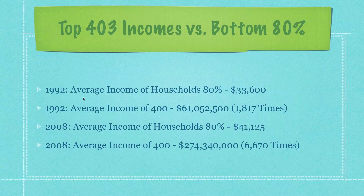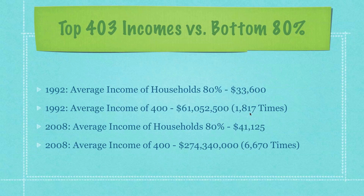Breaking everything down further: in 1992, the average income of households for the bottom 80% of U.S. citizens was $33,600, rising to $41,125 in 2008. Comparing that to the top 403 billionaires, they earned on average 1,817 times as much as the average bottom 80% household in 1992. By 2008, that multiple had jumped to 6,670 times the average income for the bottom 80% of U.S. households.